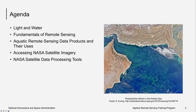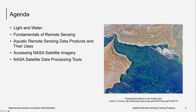In this webinar, we will cover a broad range of information. First, an overview of light and how it interacts with the water column. Next, the fundamentals of remote sensing. Third, we will discuss the types of data products we can derive from imagery and how those data products may be used. We will also discuss NASA satellite imagery data sources and data processing tools. There will be helpful links throughout the webinar that you can use to refer to online resources.